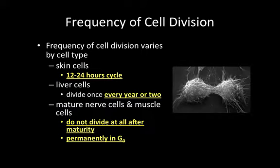Let's talk about the frequency of cell division across a couple of cell types. Skin cells divide roughly every 12 to 24 hours depending on location. Liver cells divide only once every year or two — they're very unique cells that simply don't die as frequently, so they divide less frequently and don't need to replace cells as often.